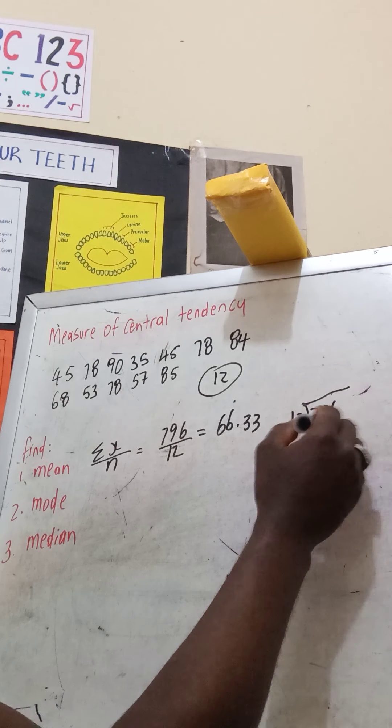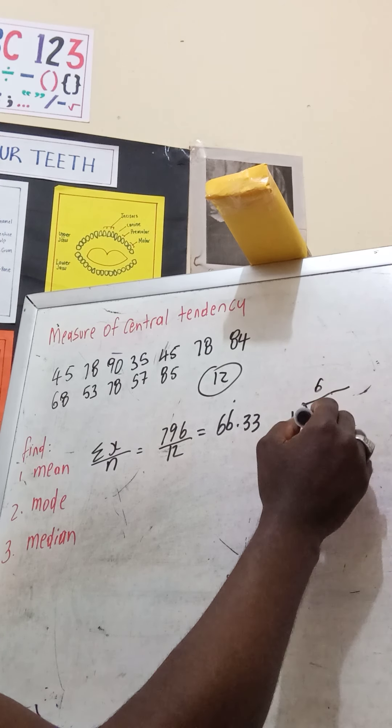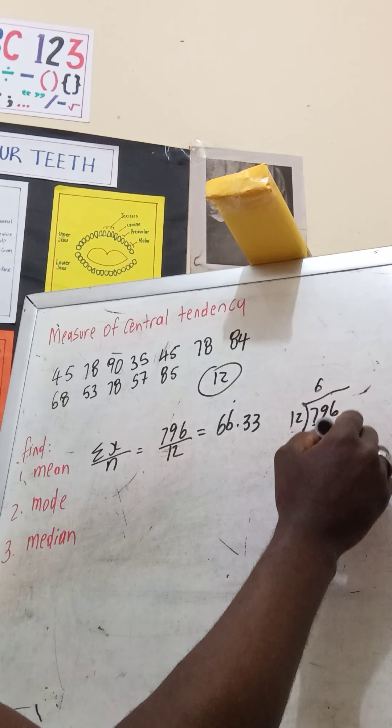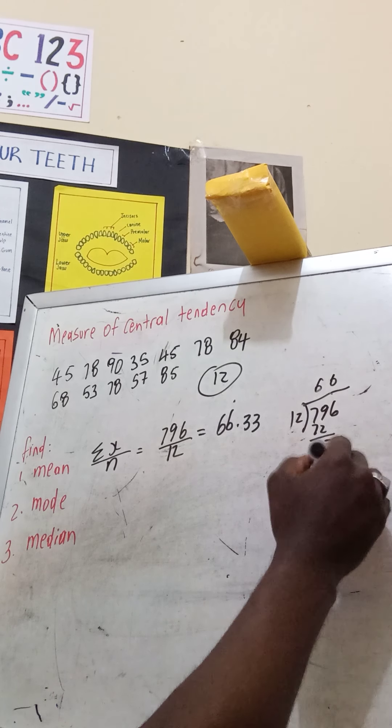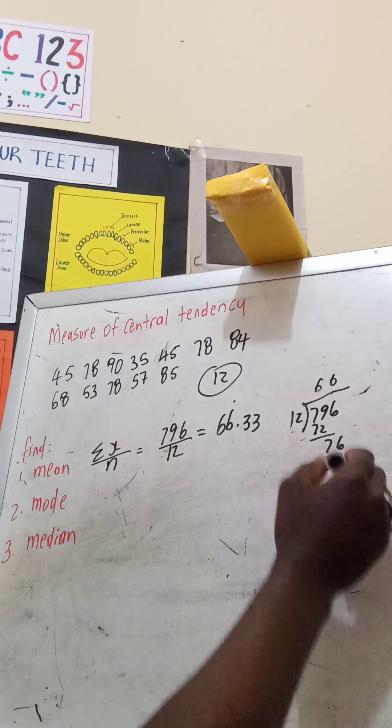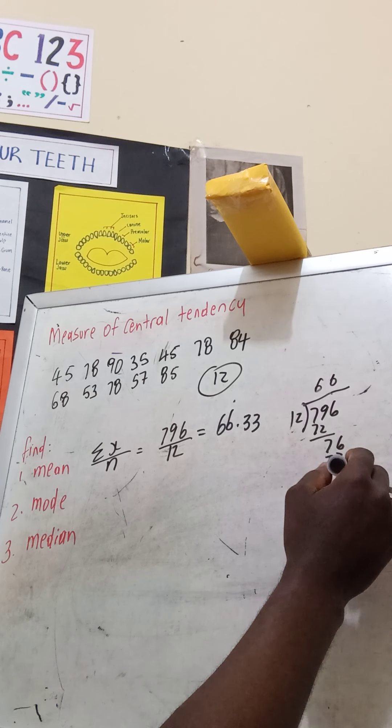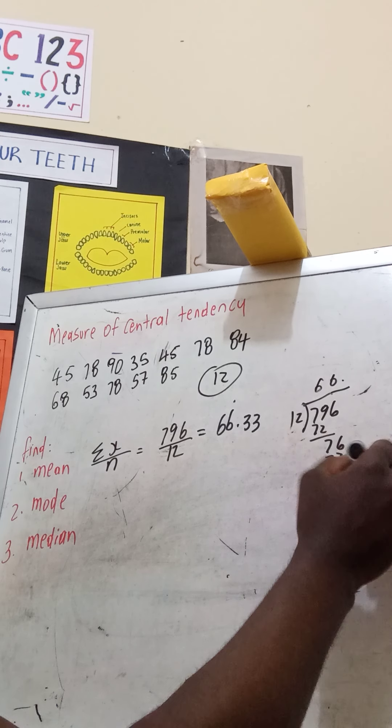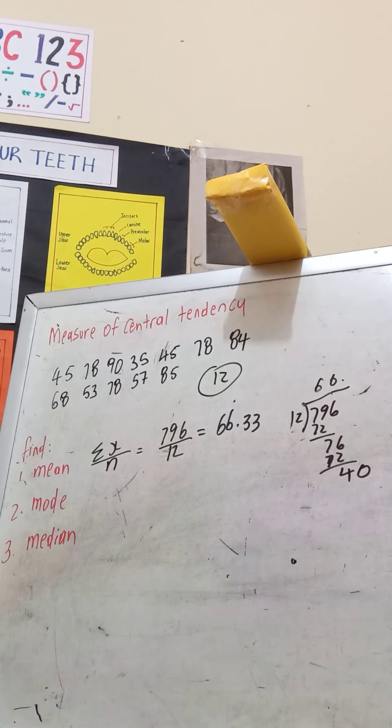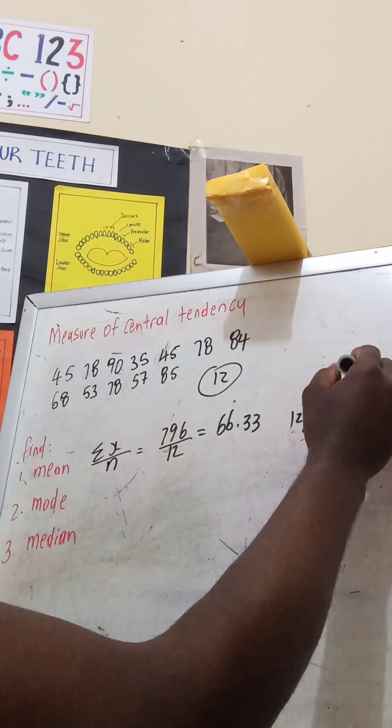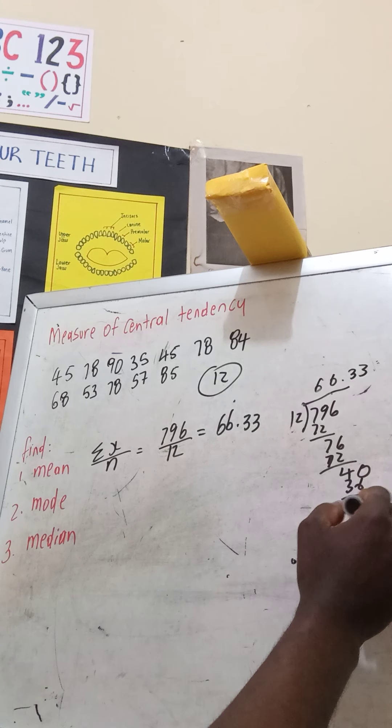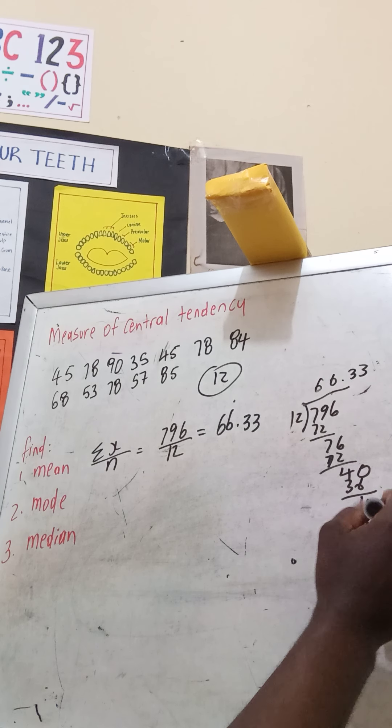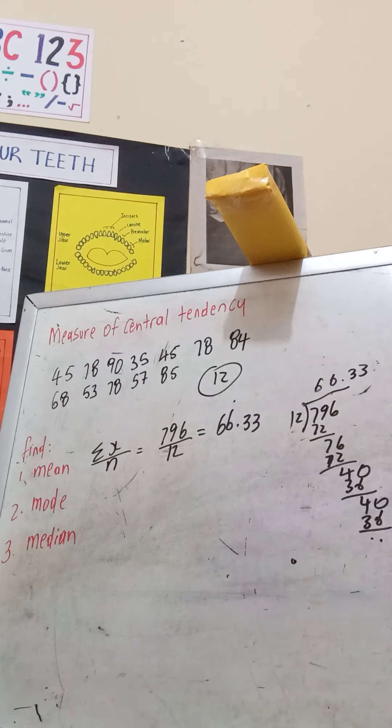12 into 79 is 6. 6 times 12 is 72. 79 minus 72 leaves 7. Bring down the 6 to make 76. 12 into 76 is 6. 6 times 12 is 72. 76 minus 72 leaves 4. Then 12 into 40 is 3. 3 times 12 is 36, leaving 4. And we stop there, so you get 66.33.